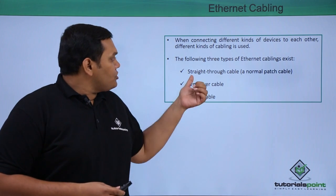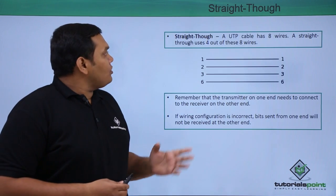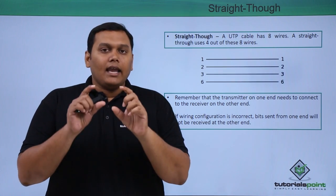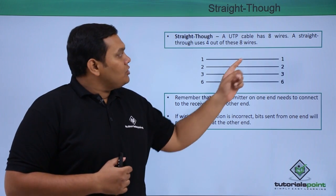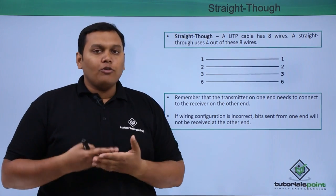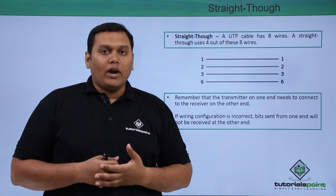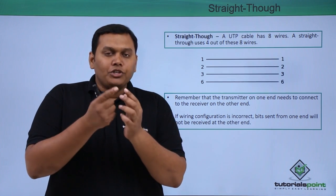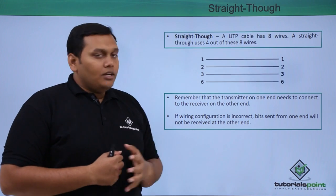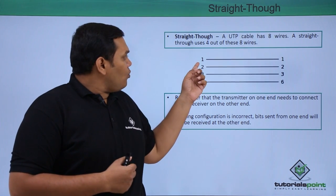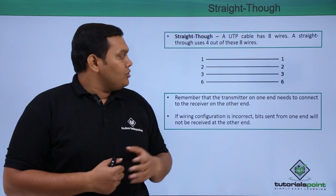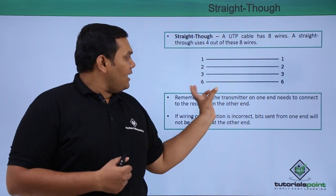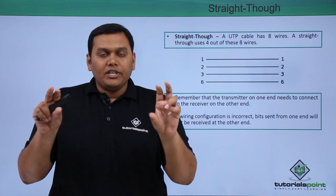A straight-through cable uses a twisted pair cable that has eight wires in it. A straight-through cable uses four out of these eight wires. The wires are twisted in pairs, and the pins used are 1, 2, 3, and 6 — meaning 1 connects to 1, 2 to 2, 3 to 3, and 6 to 6.